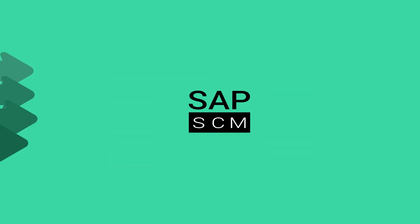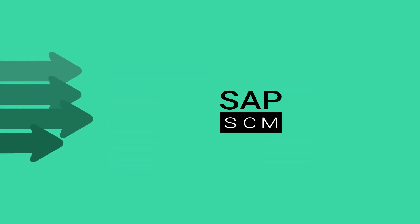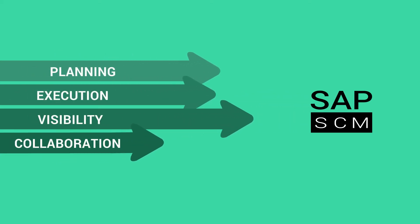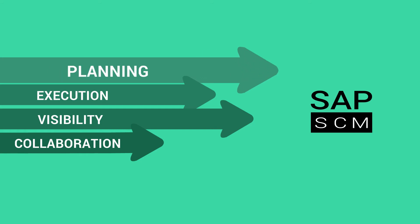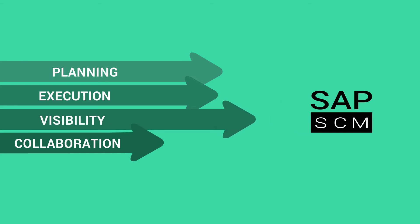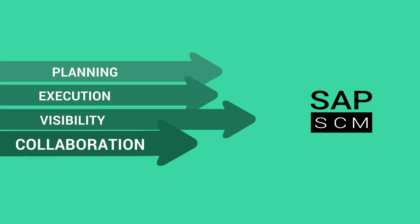SAP SCM contains four main components to help you plan these aspects of a supply chain network. They are supply chain planning, supply chain execution, supply chain visibility, and supply chain collaboration.